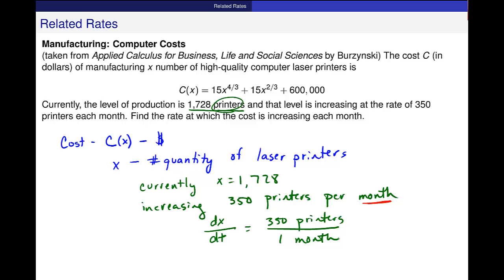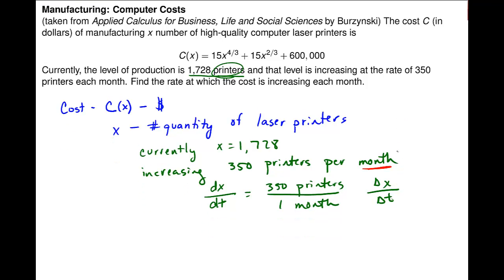So really, I have this hiding that x is changing at 350 printers, and the time is in one month. This is a rate. And this is some sort of change in x over change in time. Goes back to that original interpretation of the derivative as a slope, as this average rate of change.